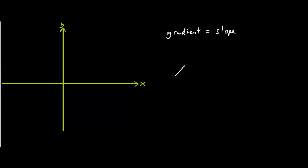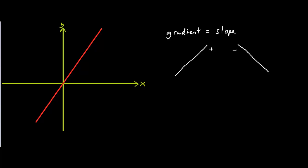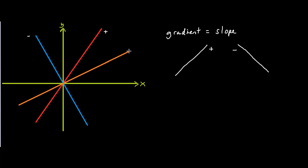Slopes can be positive and slopes can also be negative. So this line over here would have a positive slope. On the other hand, this line over here would have a negative slope. So the red line would have a positive slope and the blue line would have a negative slope. Now slopes on lines can be steep and sometimes they can almost be flat. So the slope on this line isn't as steep as the slope on the red line.